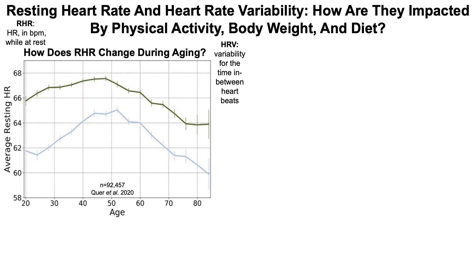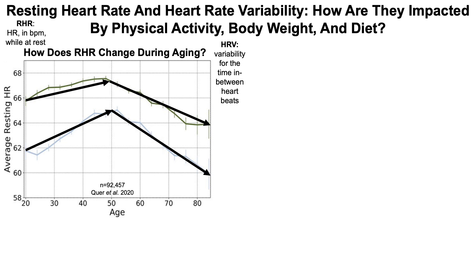How does resting heart rate change during aging? This is a study of 90,000 plus people, with average resting heart rate on the y-axis plotted against age from 20 to 85 years. What we can see is that for both women in green and men in blue, the resting heart rate increases up until about 50 years, after which it decreases all the way up to 85.